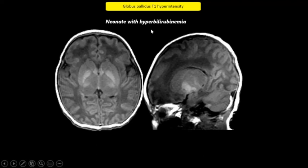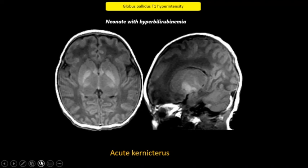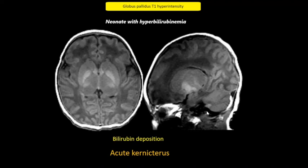This neonate with hyperbilirubinemia has symmetric T1 hyperintensities in the globus pallidus and the subthalamic nucleus. These findings are typical for acute kernicterus, and the finding is due to deposition of bilirubin. Note the mild T1 hyperintensity involving the ventrolateral thalami, posterior putamina, and the flocculus, which represents normal myelination. Bilirubin deposition can also occur in the brainstem auditory nuclei and the 7th and 8th cranial nerves, therefore leading to sensorineural hearing loss.